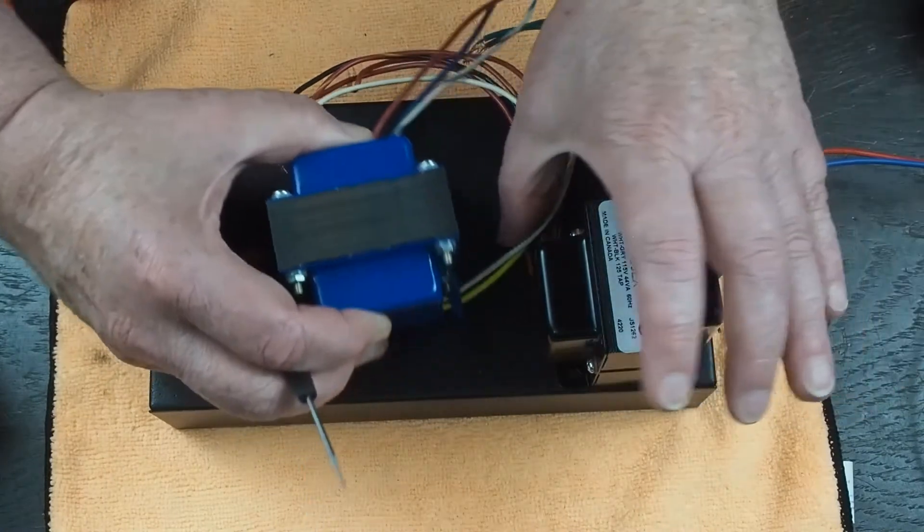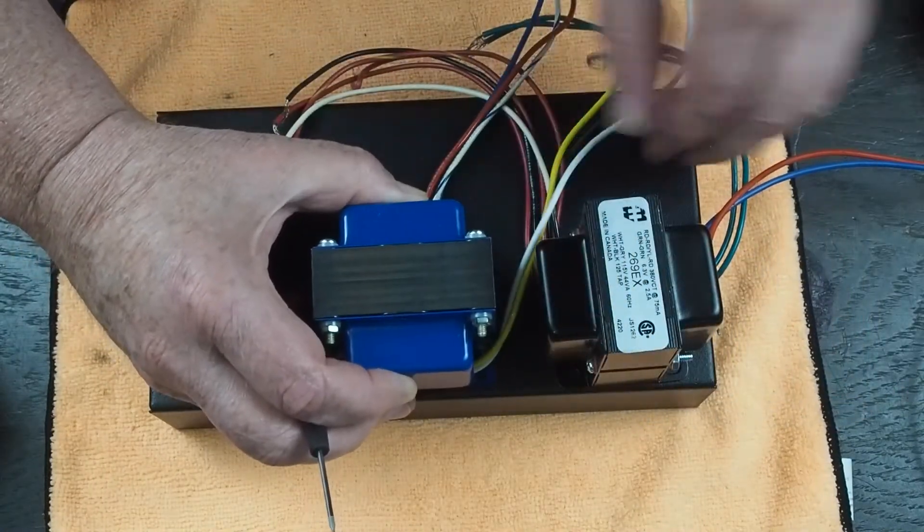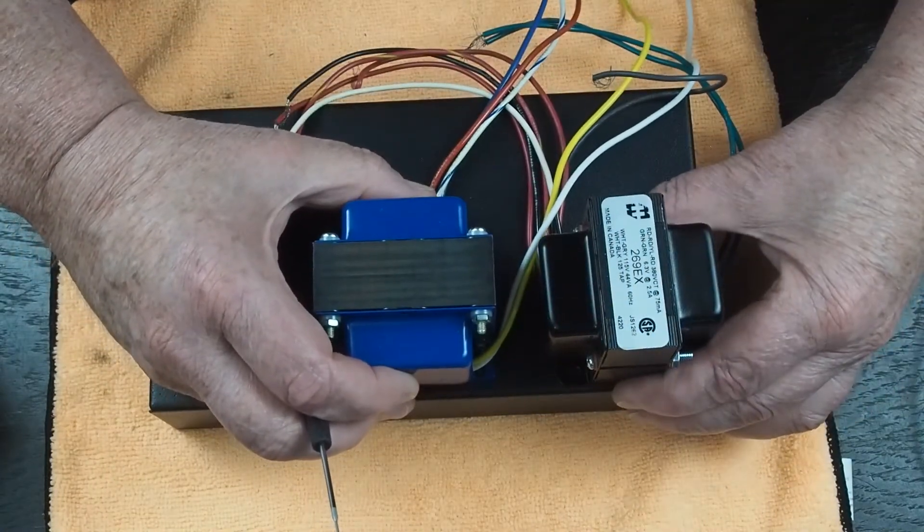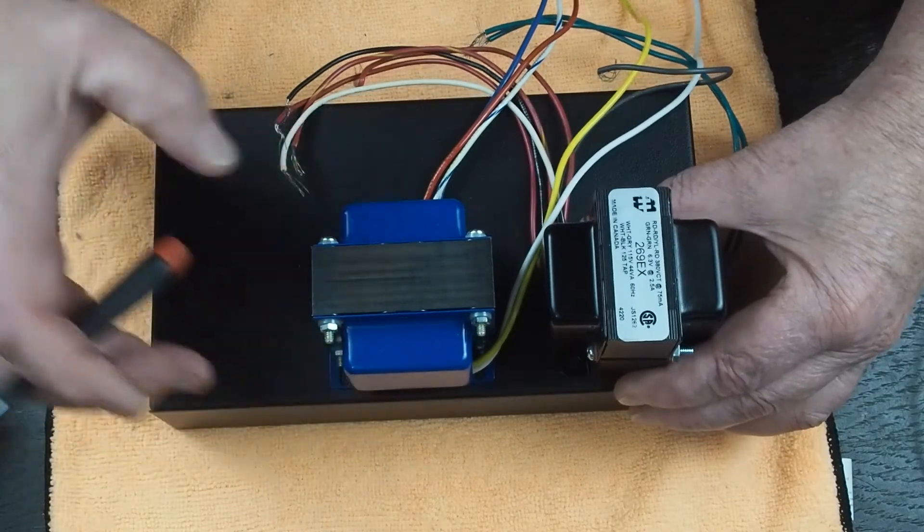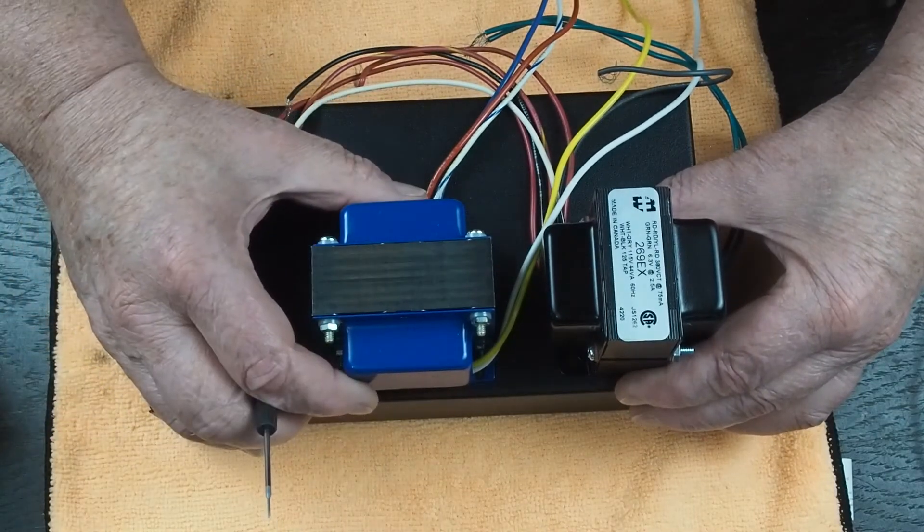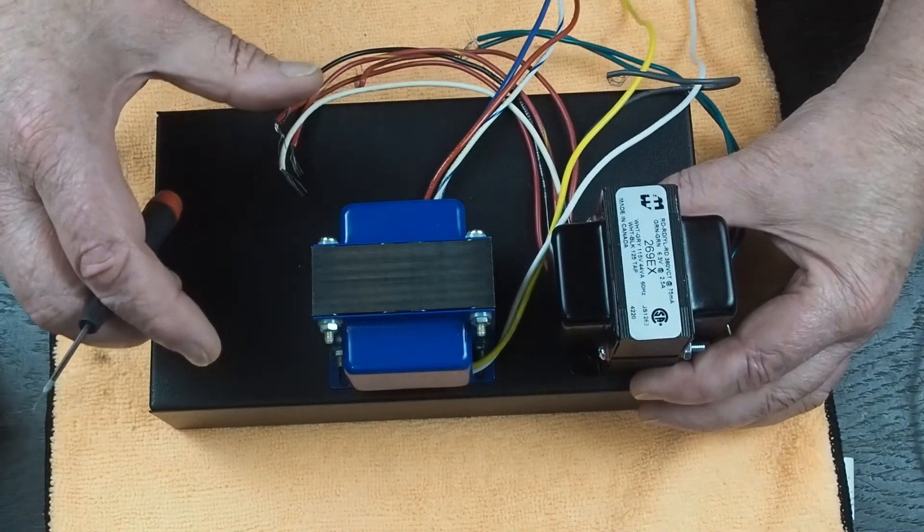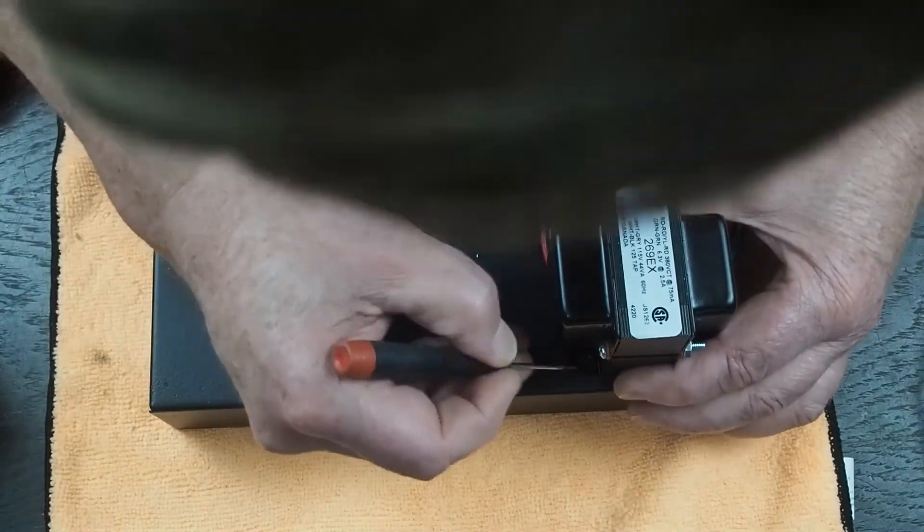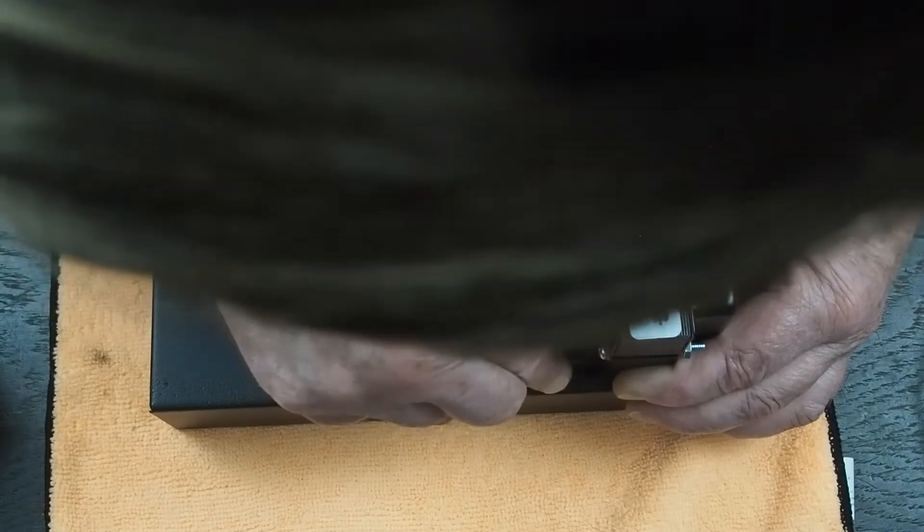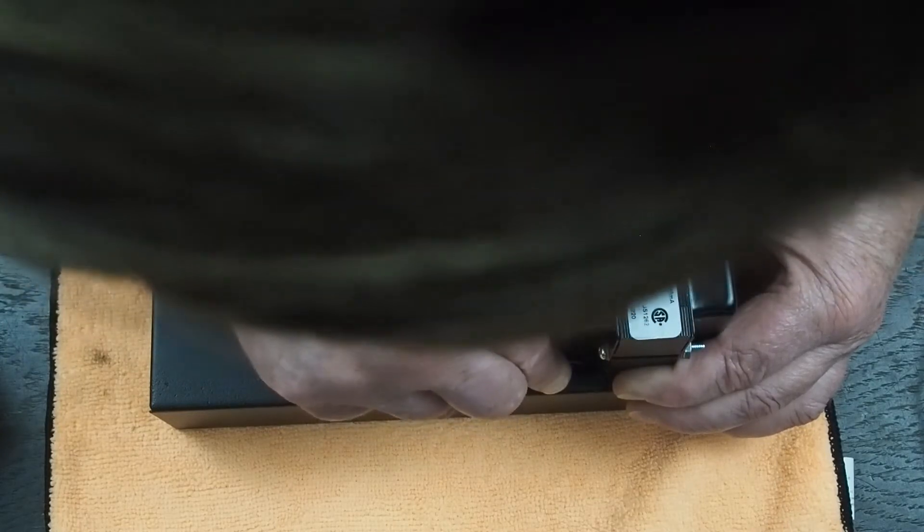We'll mark the hole for the wires after we drill the mounting holes for the transformers. So now I'm going to mark the power transformer. This powder coating is pretty tough. It takes a pretty sharp screwdriver to make the mark, the little nick mark that we want to put where the button head screws are going to be.